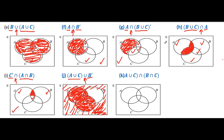A union B — take this bracket as a whole one element: A and B. Now identify C. There is union between them, so we shade both double tick and single tick. So this whole region will be shaded.